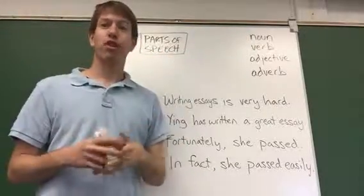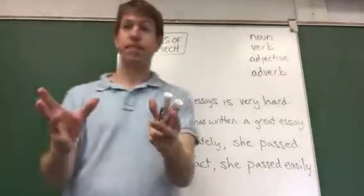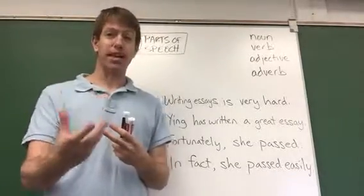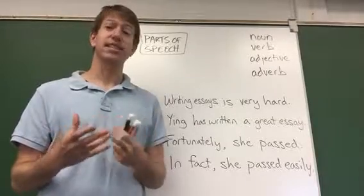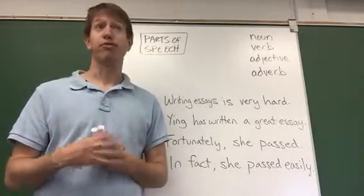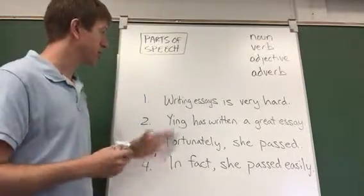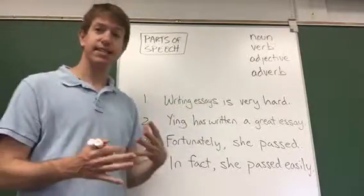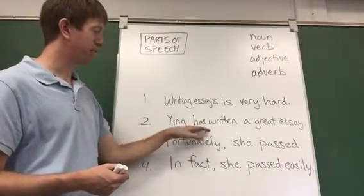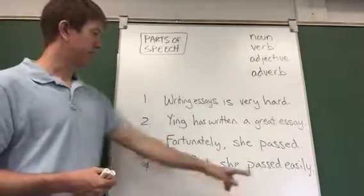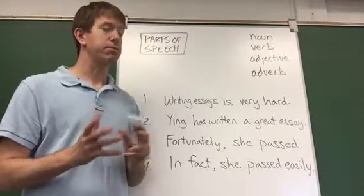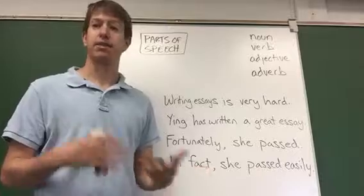Let's look at verbs. Verbs, people think, describe the action of the sentence. Every sentence should have at least one verb in it. In English, verbs are the kind of things that take tense. So you could have a present tense verb, a past tense verb, or a future verb with 'will.' So if we look at some examples, 'is' is the most common verb; 'has written' is a verb in the perfect; we have a past tense verb here. So if you're not sure if something's a verb, think about whether you can make it into a past tense or a present tense.